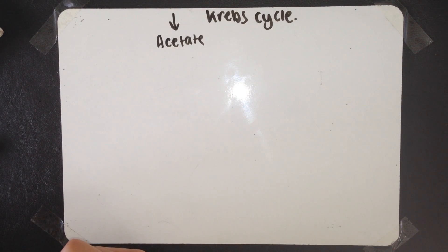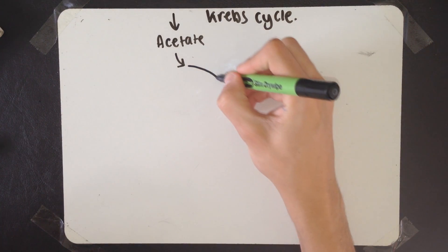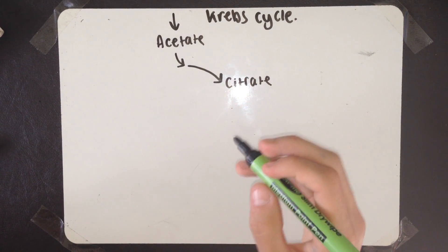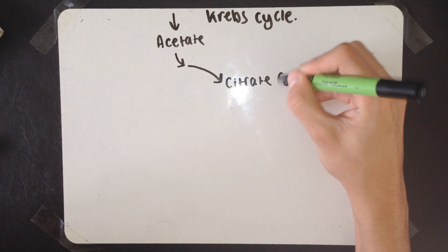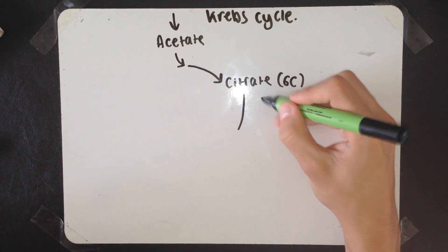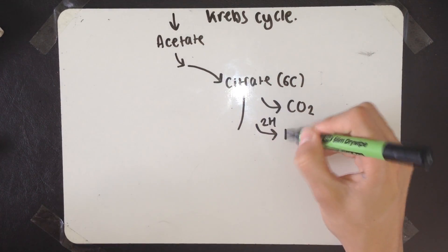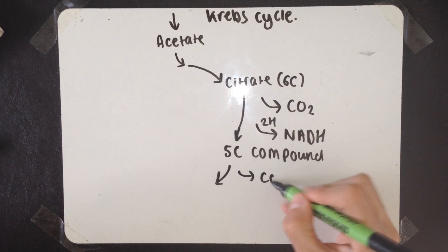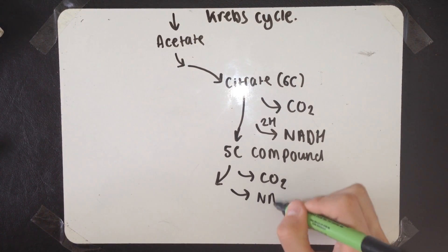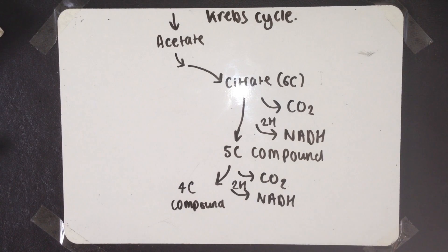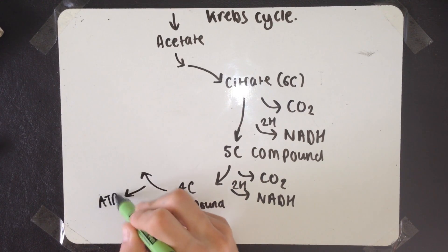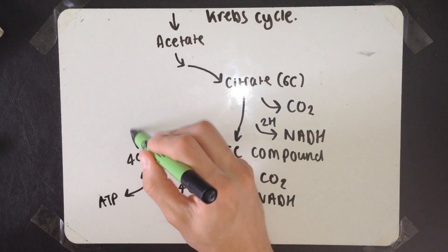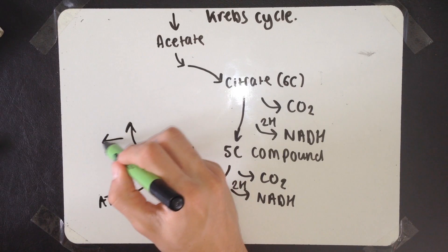Now, the Krebs cycle. Straight away from the link reaction, we've just had our acetate, remember? Now, this joins with a compound, which I'll describe in a minute, to form citrate. Acetate is a 2-carbon compound. Citrate is a 6-carbon compound. The citrate is dehydrogenated and decarboxylated. This leaves you with a 5-carbon compound. Here, the exact same thing happens again. The 5-carbon compound is decarboxylated and dehydrogenated. Due to substrate-level phosphorylation, ATP is created during this stage at the 4-carbon compound. But you also have the same 4-carbon compound next. Now, this 4-carbon compound is also dehydrogenated.